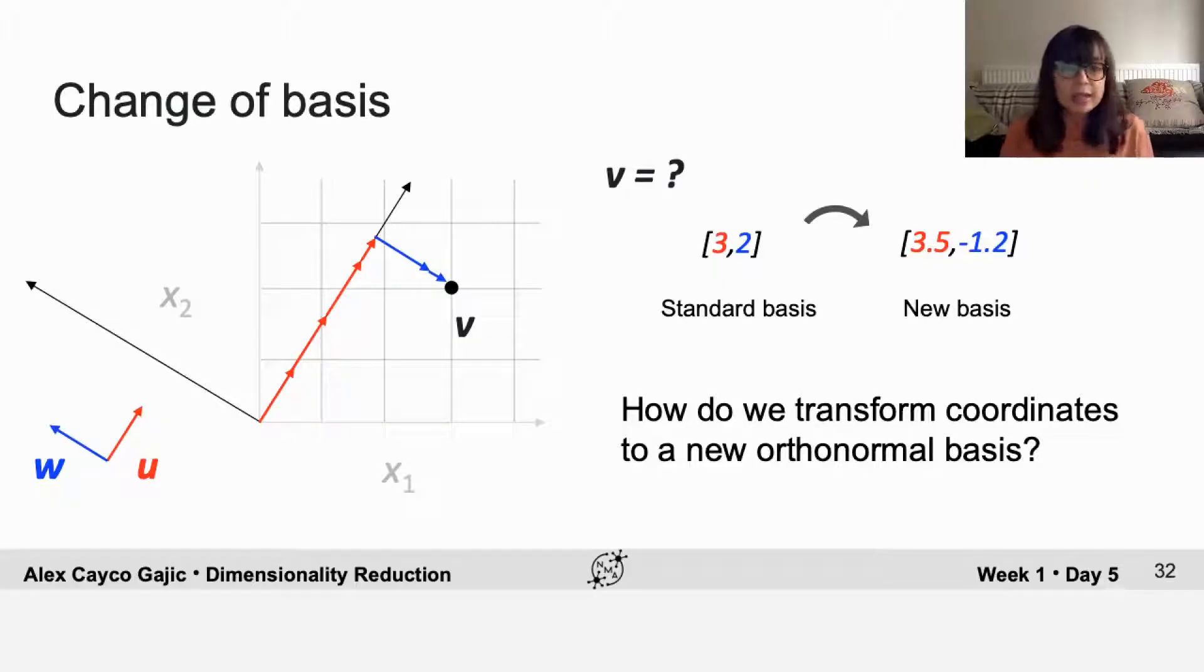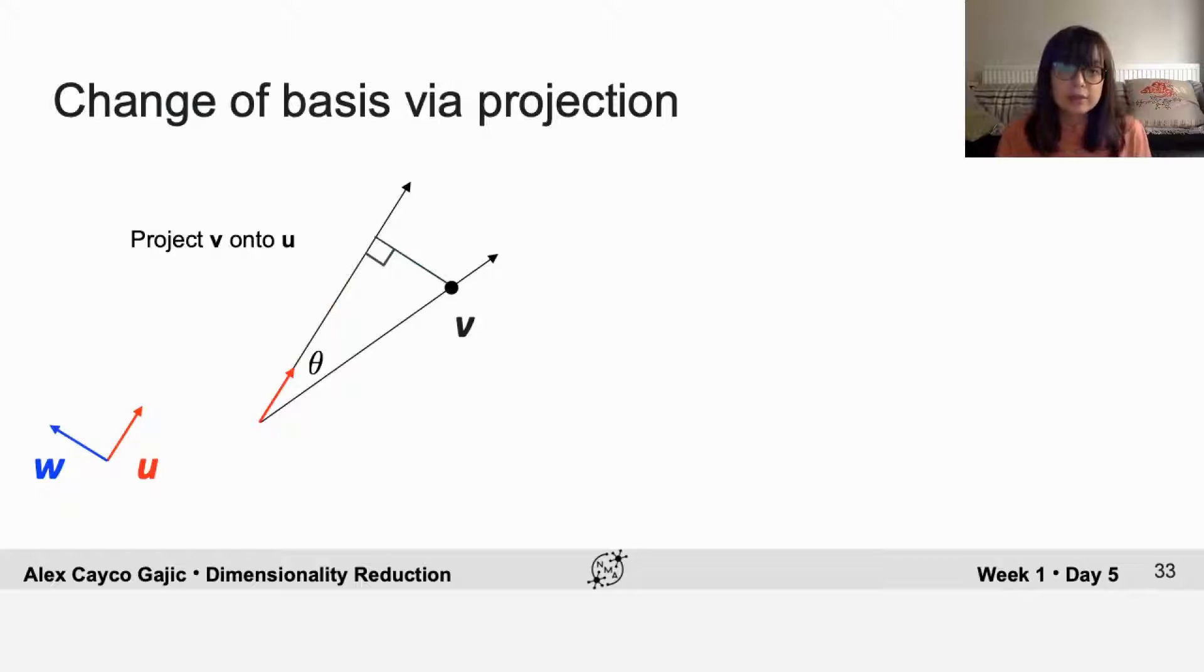Looking on the left, you can see that if you want to find the coordinate for your data point V along the new direction U, you just need to project V onto U and find the magnitude of that projection. We can draw this as a right triangle and remember that the cosine of theta is the adjacent over the hypotenuse. In this case, the hypotenuse is the magnitude of V and the adjacent is what we're looking for, the magnitude of the projection.